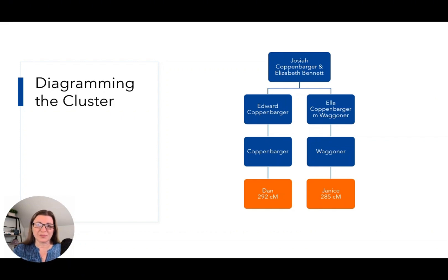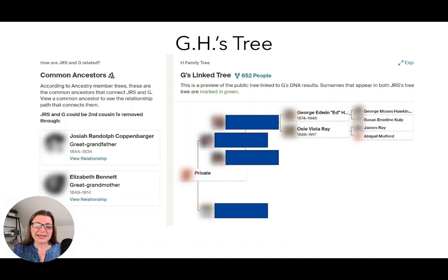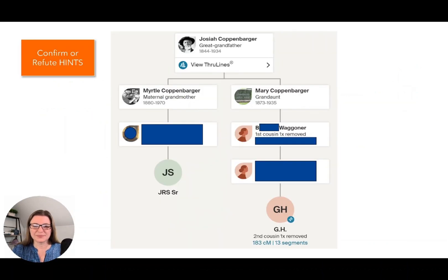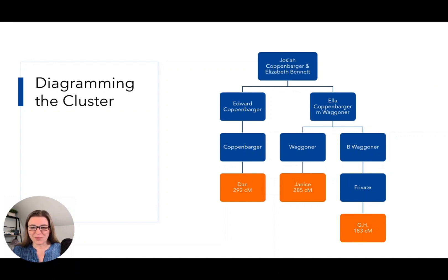The third blue match is GH. He has a lot of people in his tree — 652 — but it's really mainly on his dad's dad's part of the tree. I didn't recognize anybody in his tree that I could see right here. But on the left you can see a common ancestor hint showing how they think GH and my dad might be related. I can click to view that through-line and see how they're predicting the relationship. On the left is my dad JRS, a great-grandchild of Josiah Koppenbarger and Elizabeth Bennett, and on the right is GH. I confirm each of these steps, then add GH to the diagram — he is a great-great-grandchild of Josiah and Elizabeth through one of their daughters.